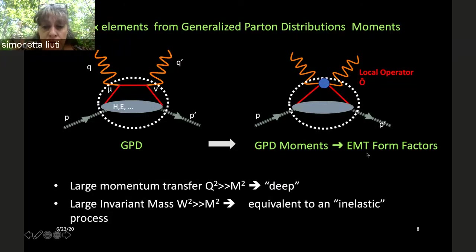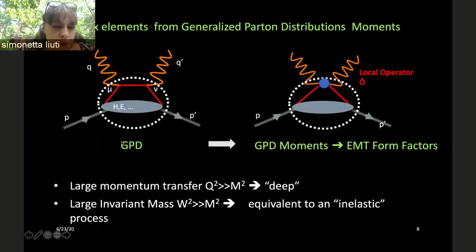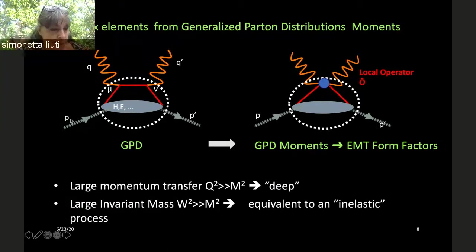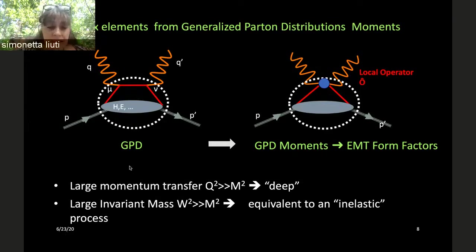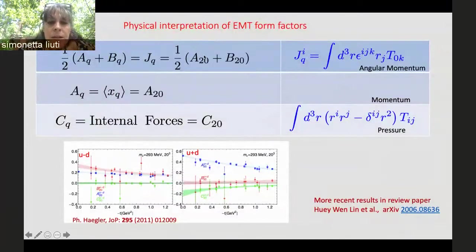To realize this process, we need a large momentum transfer — deep inelastic scattering — where the proton switches momentum but there's also an emitted photon and potentially a large invariant mass at the soft blob. This makes it equivalent to an elastic process. This process is deeply virtual Compton scattering, which you've heard about a lot this morning.